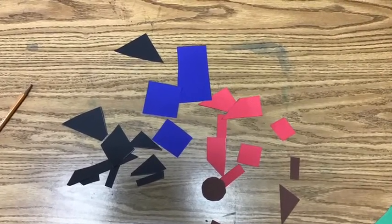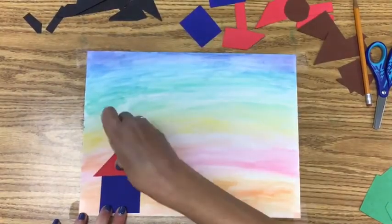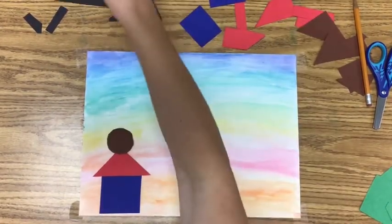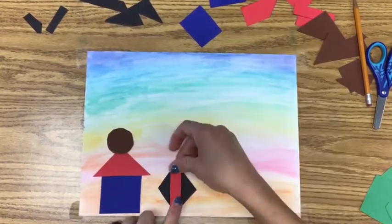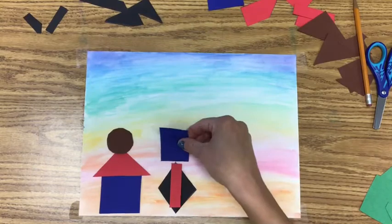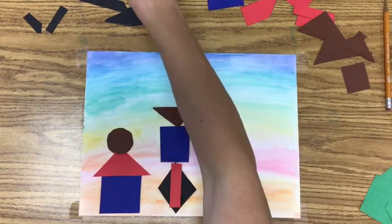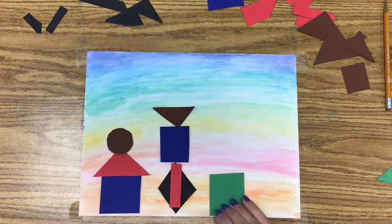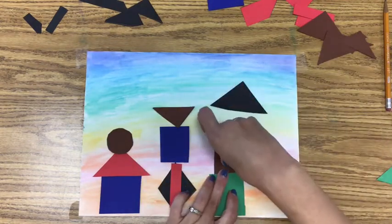Now you are going to need your background from last week. Start laying out a design of shapes onto your background. You can stack the shapes on top of each other, overlap one with another, or spread them out all over your paper. Move them around until you make a nice beautiful design that you like.